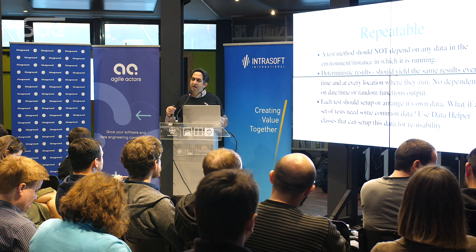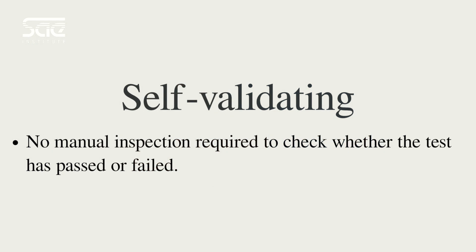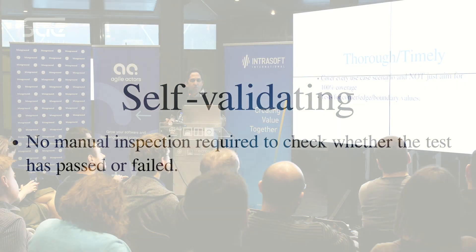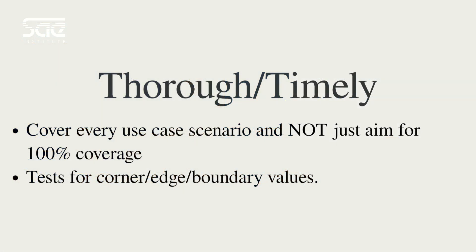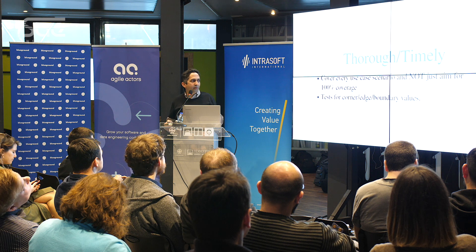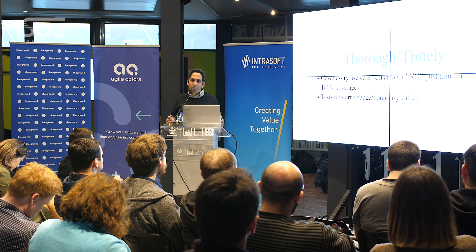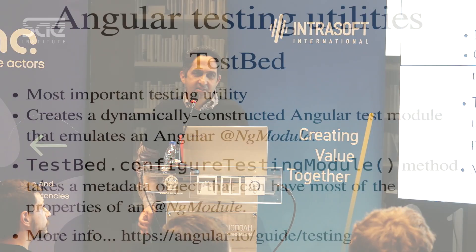Therefore, the next unit test must use the same bunch of data. Self-validating means that the unit test must be explicit on its failure or success — we should not inspect in the code whether the unit test has passed or failed. Timely and thorough means that we should cover the happy scenario, the happy path. We must not aim for 100% coverage, although at times it might be useful to provide corner or boundary values to see how the unit behaves.